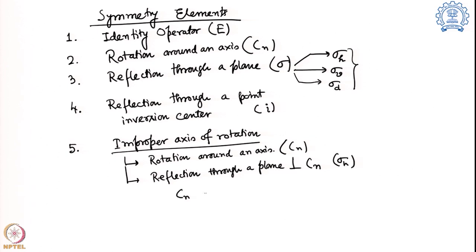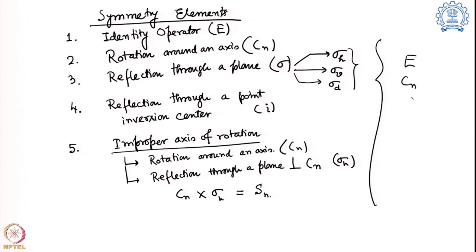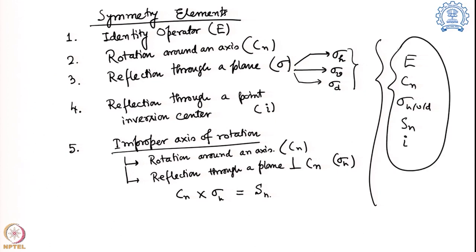So it is basically a sigma H. We are doing two operations together: CN followed by sigma H. This is nothing but the SN axis. These are the five different components of symmetry elements we have found, and we have also found that these five different groups can be combined into particular groups — those groups are known as mathematical groups.